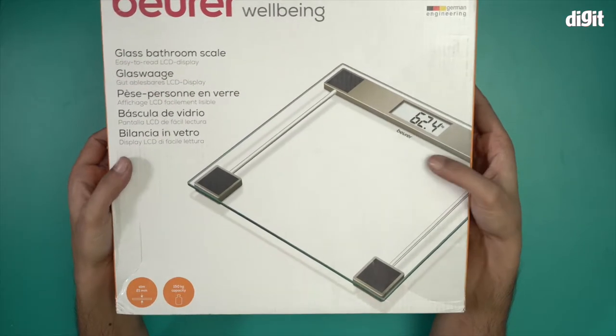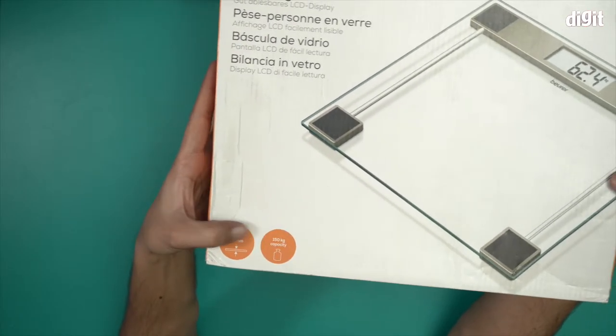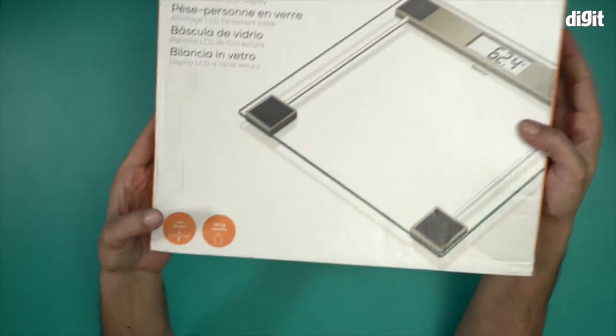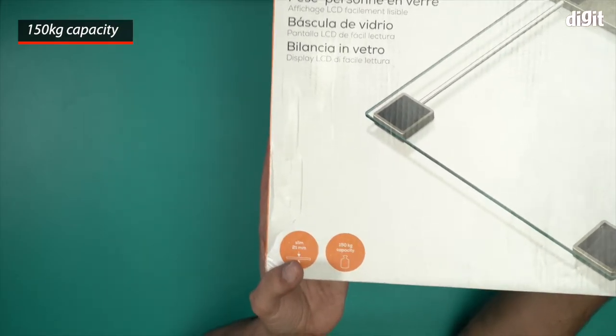You can see a picture of the weighing scale on the box. It's 21 millimeters thick, which is a little over 2 centimeters. This bathroom scale has a capacity of 150 kilos, as written right here.